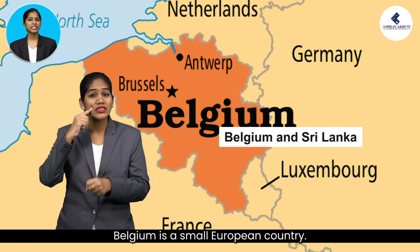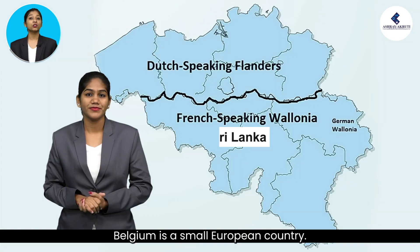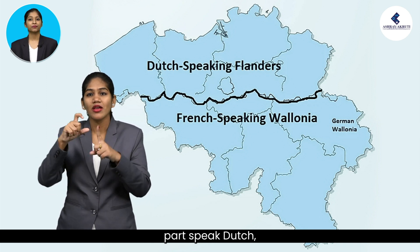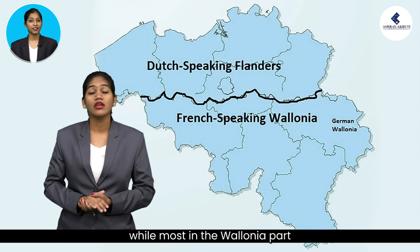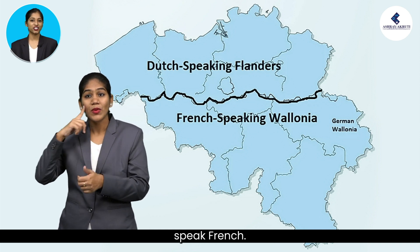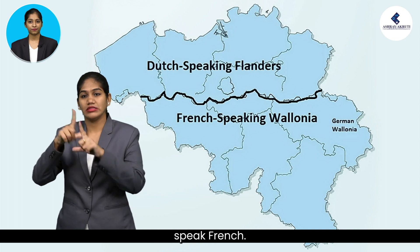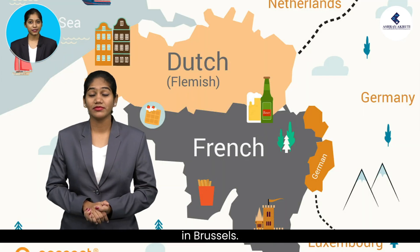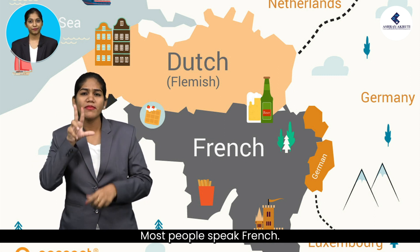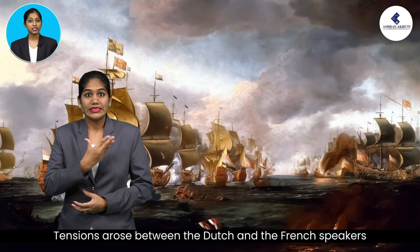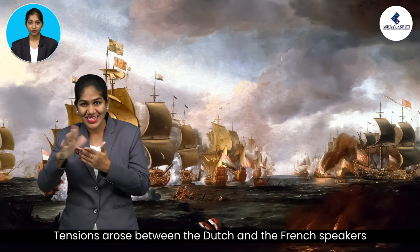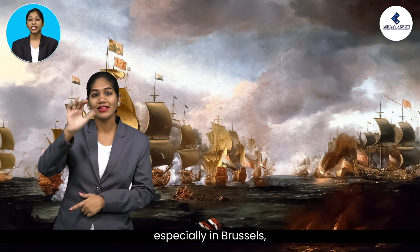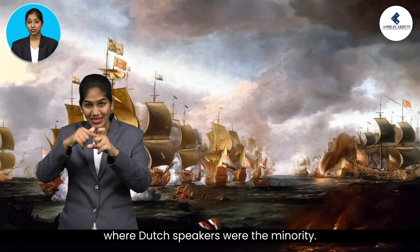Belgium is a small European country. Most people in its Flanders region speak Dutch, while most people in other parts speak French. A small number of people speak German. Tensions arose between the Dutch and French speakers in the 1950s and 1960s, especially in areas where Dutch speakers were a minority.